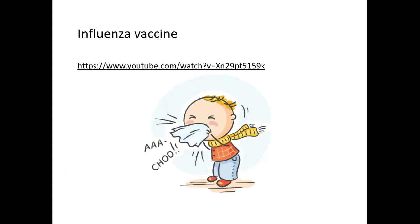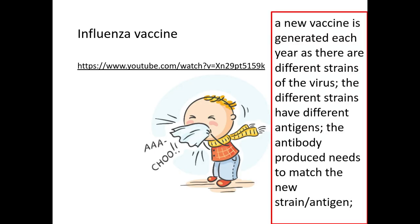The influenza — or flu — vaccine is issued on a yearly basis. The World Health Organization looks at the different strains of flu that have been present within the previous year and predicts which strains are going to appear again. Through that prediction they design a flu shot which enables you to fight off that strain of flu due to appear that year. A new vaccination is generated each year because there are many different strains of the virus. The different strains have different antigens, and therefore the antibodies produced need to match the new strain's antigens — so we get a new vaccination each year to help our body produce the antibodies needed to match the new antigen on the new strain.